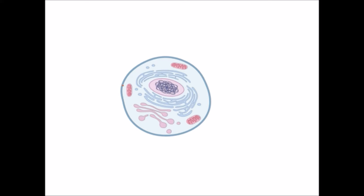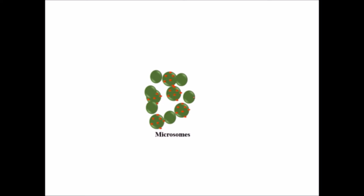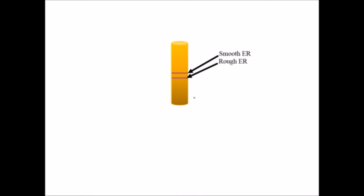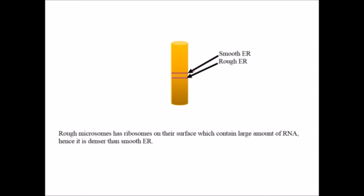When we rupture a cell and isolate the endoplasmic reticulum, we get microsomes, which are parts of the endoplasmic reticulum that have disintegrated. When we centrifuge these microsomes, we get two bands: the denser band is the rough endoplasmic reticulum and the lighter, less dense band is the smooth endoplasmic reticulum. The rough ER is denser because it contains ribosomes on its surface, which contain a large amount of RNA.